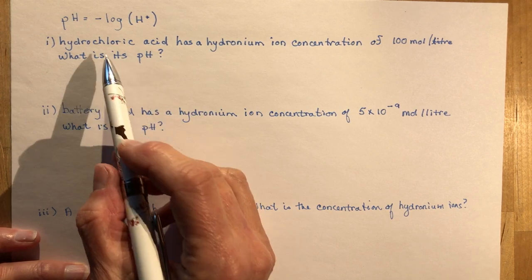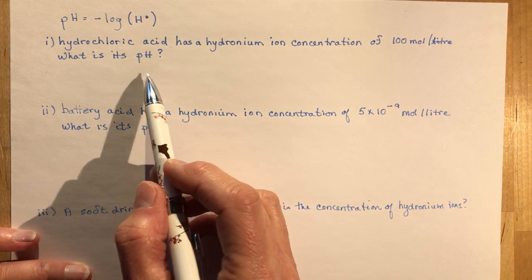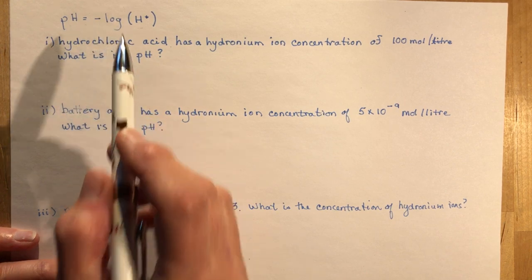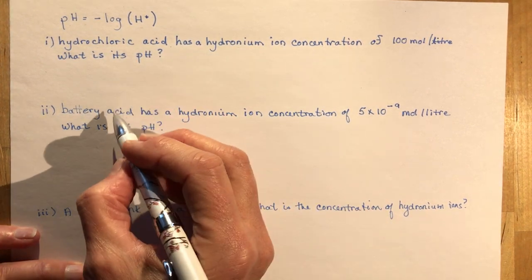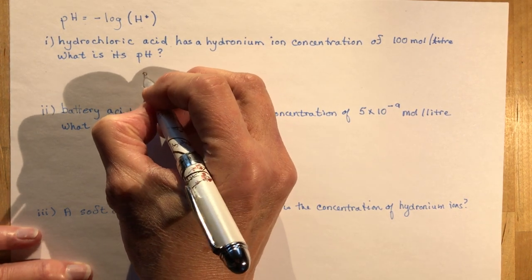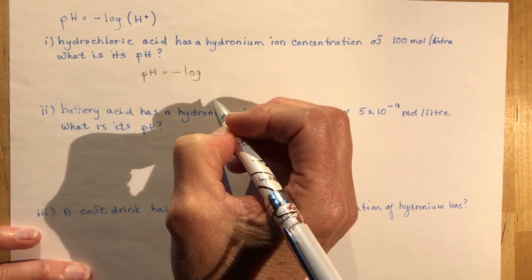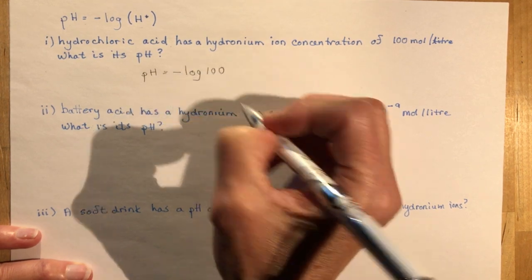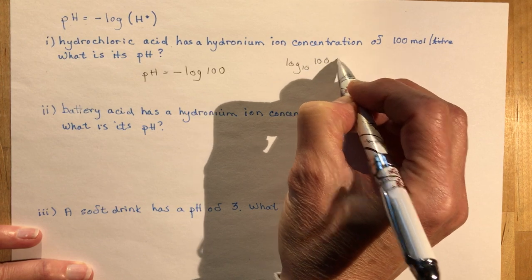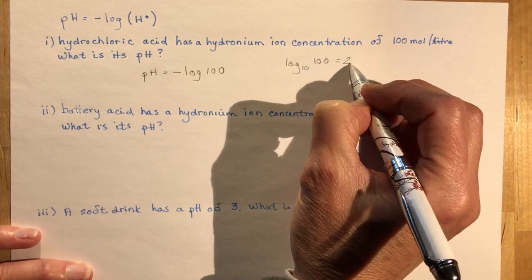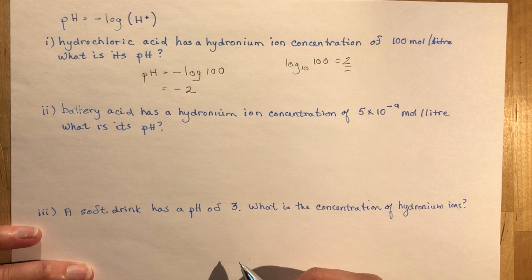Now we're going to be trying to find the pH of something. Hydrochloric acid has a hydronium ion concentration of 100 moles per liter. What is its pH? pH is the negative log of the hydrogen ions. I bet you've done this in your class if you took chemistry. So hydrochloric acid, HCl. The pH is equal to the negative log of the hydronium ions, so the negative log of 100. The log of 100, remember this is base 10, what do I raise 10 to to get 100? You would say 2. So we're going to put that in here and we get negative 2. The pH is negative 2. Not so hard.